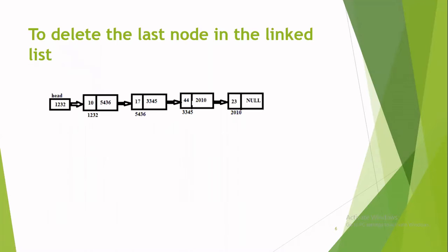Let us now discuss how to delete the last node present in the linked list. I have considered the same linked list as before. The last node is the node with data item 23, and we have to remove this node. To remove the last node, you have to traverse from the first node to the node that is present previous to the last node. Once you identify the previous node, you have to change the link part of the previous node. Because you are deleting the last node, the link part of the previous node should be set to null.